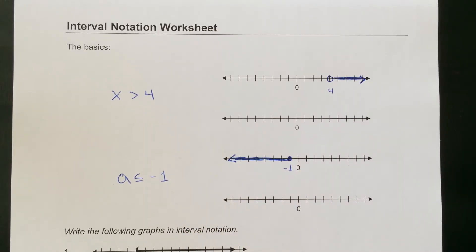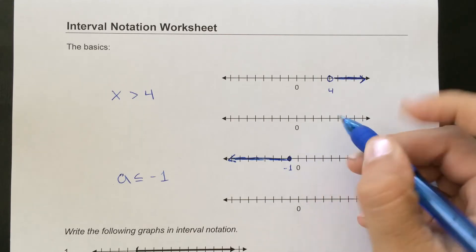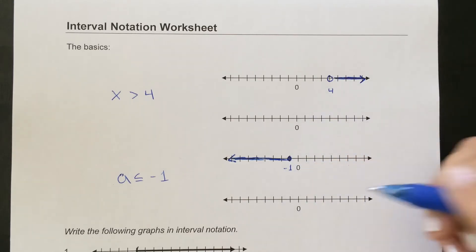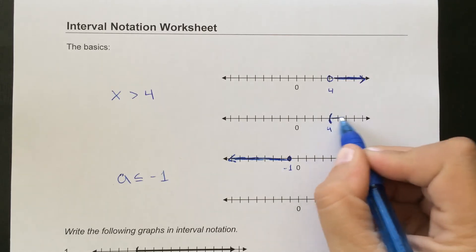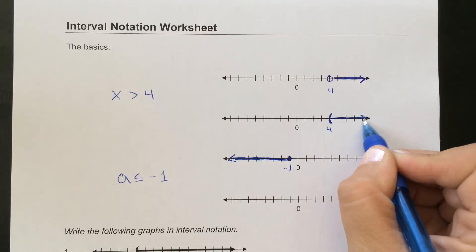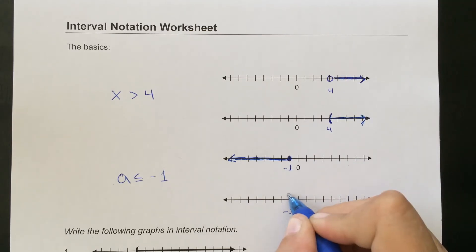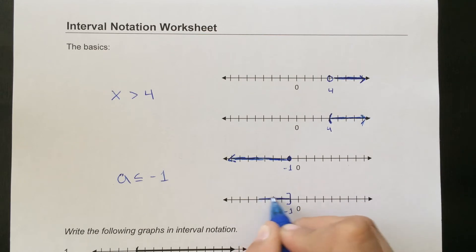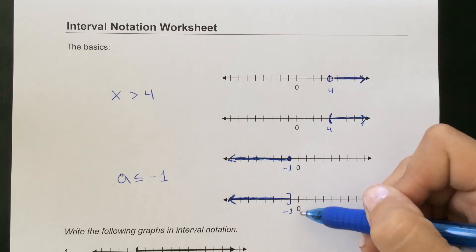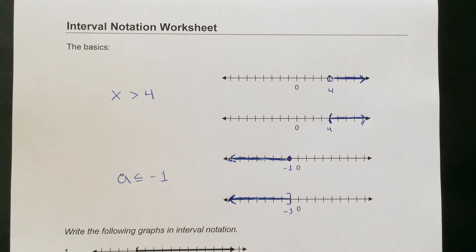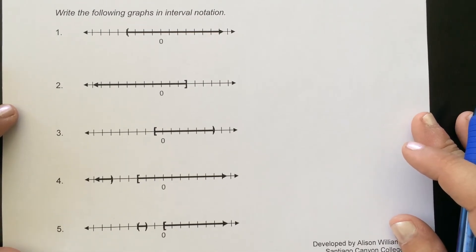There's an alternative way to draw these that's actually really helpful for interval notation. Rather than using an open circle or a closed circle, you can use a parenthesis or bracket. You would still go to 4, but instead of an open circle, you use a parenthesis — a parenthesis means it's not equal to that number. And instead of a closed circle at negative 1, you use a bracket — a bracket means it's allowed to equal that number. Both representations are equivalent.